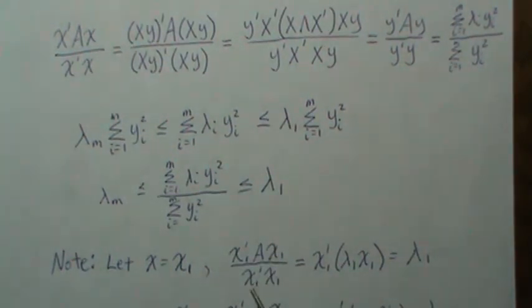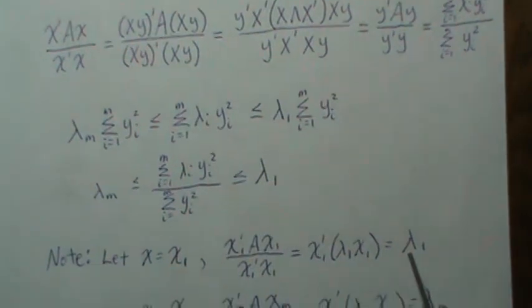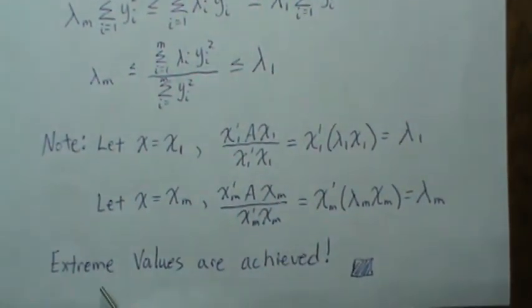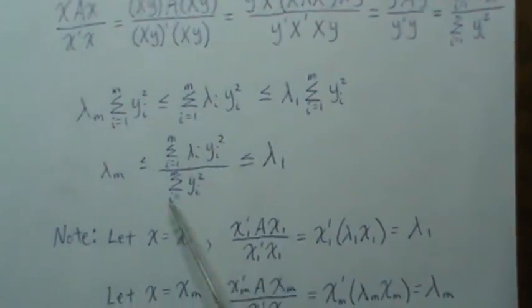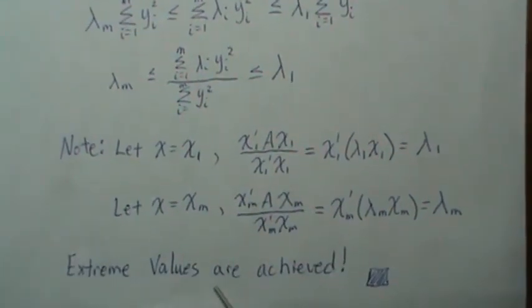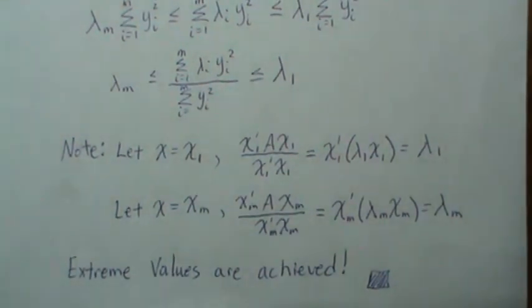The sum, this is 1 and then this constant comes out and then that sums to 1 again, we just get lambda 1. And we can achieve the minimum if we let it be the eigenvector associated with the smallest eigenvalue, and the same relationship holds. And then we get the smallest one, and we've shown that it is limited by the eigenvalue and it actually achieves the extreme values.